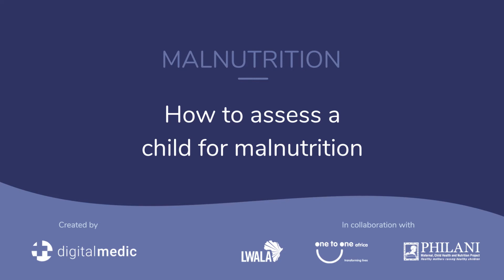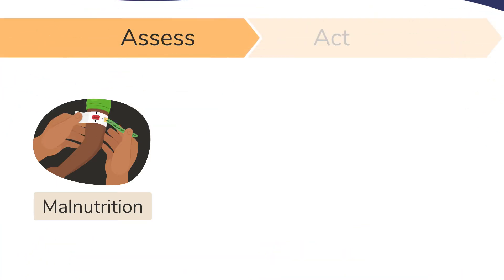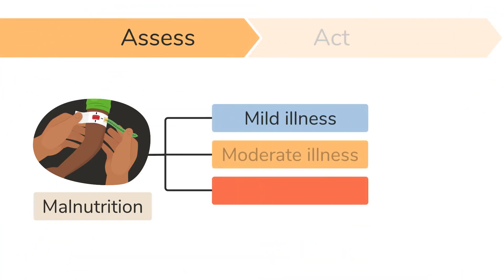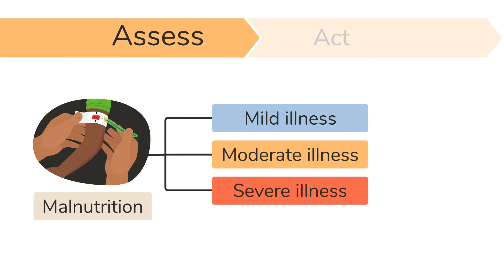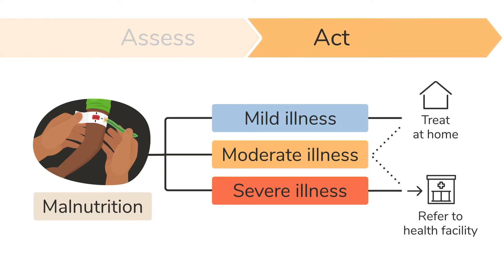How to assess a child for malnutrition. To find out if the malnutrition is a sign of a mild, moderate or severe illness, you will assess the child. Identifying a child with malnutrition early and helping them get the proper care and treatment may prevent them from needing to be hospitalized or even dying.